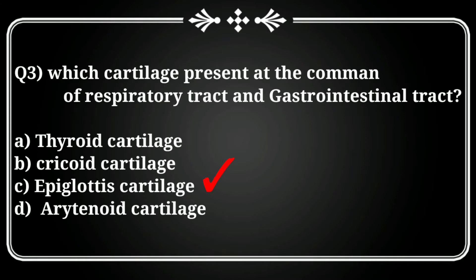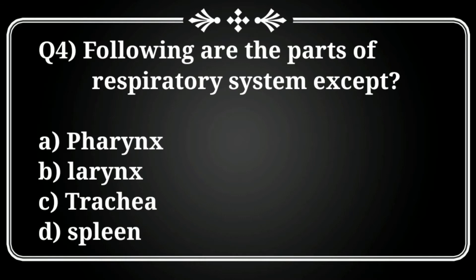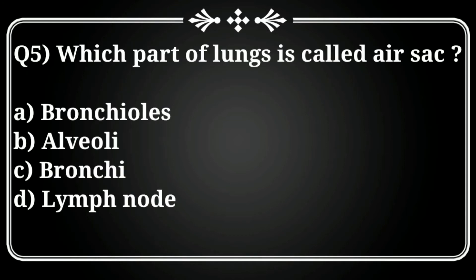Question 4: Following are parts of the respiratory system EXCEPT which one? The correct answer is D, Spleen. The spleen is not a part of the respiratory system.